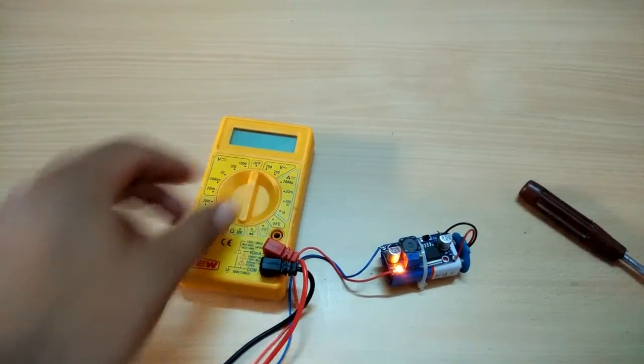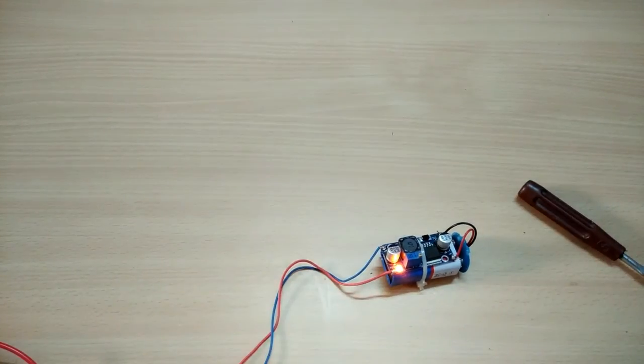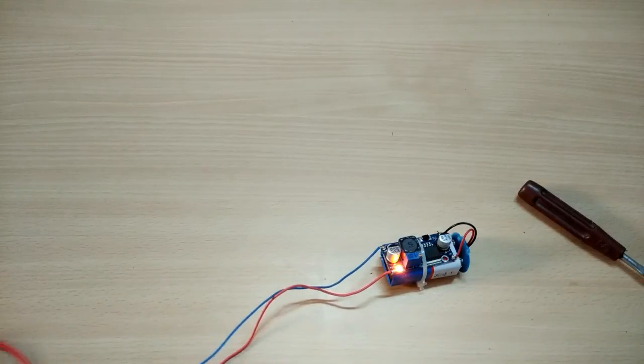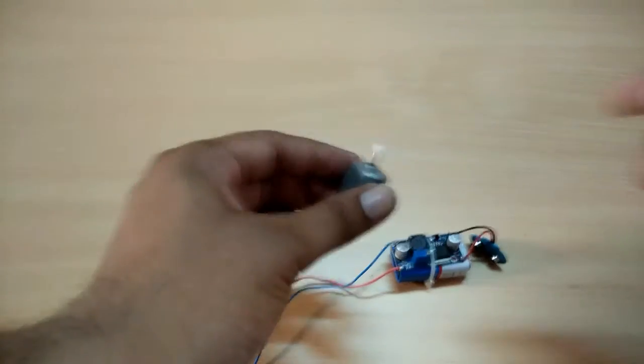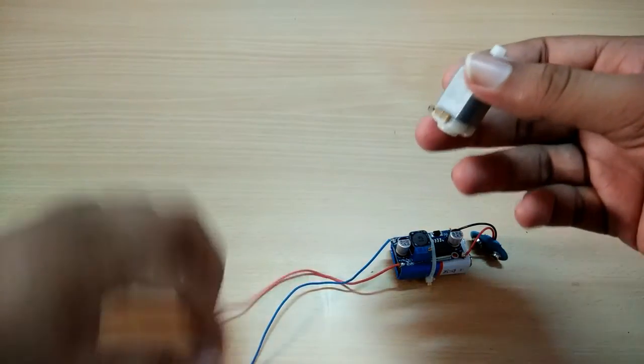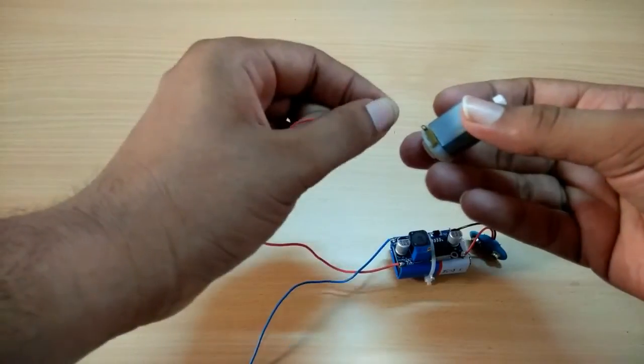Okay, now take the multimeter out and connect a motor with it. Now take a motor and connect those terminals to the motor.